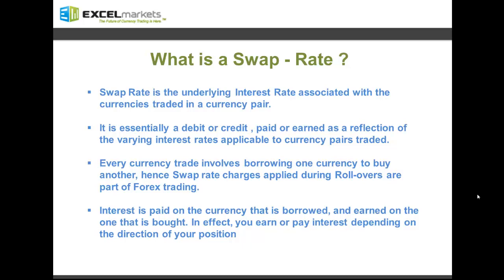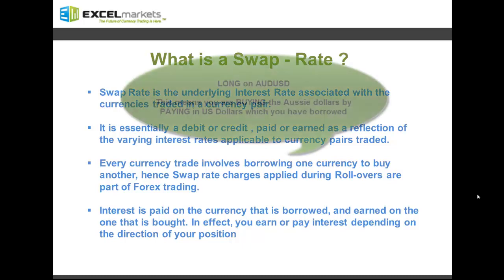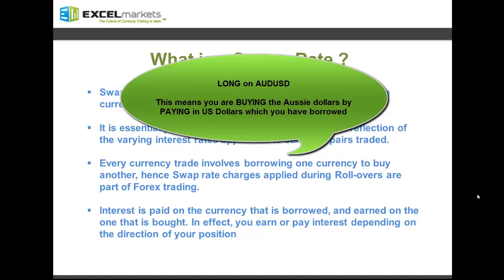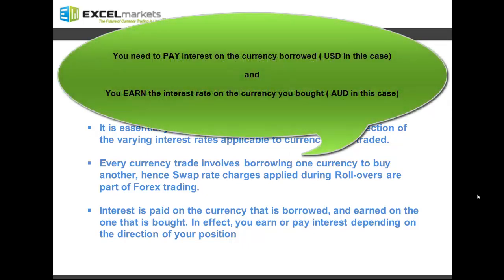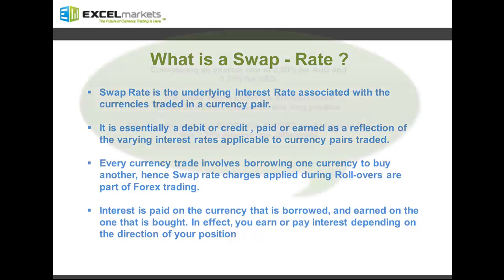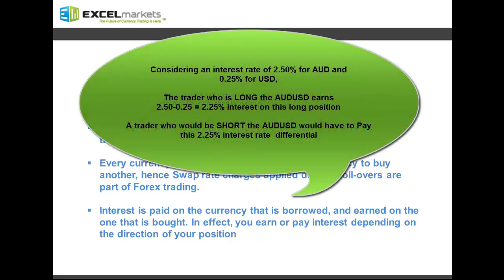Every currency trade that you place or perform on your account involves borrowing one currency to buy another. For instance, let's say you go long the Aussie dollar. This means that you're essentially borrowing US dollars to buy Australian dollars. Since you've borrowed the US dollars, you would need to pay an interest rate on them. And since you've bought the Australian dollars, you will earn an interest on them. The difference between the interest rate paid on the borrowed US dollars and the interest rate earned on the purchased Australian dollars is the net interest that you earn or lose on your currency trade.